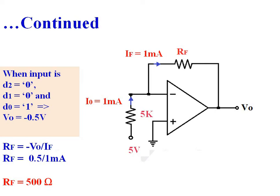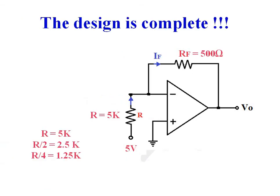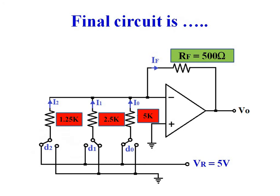If RF equals 500 ohms, then the output voltage is minus 0.5V when input is 001. The design is complete. We have feedback resistance RF equal to 500 ohms and R equal to 5 kilo-ohms. Therefore R/2 equals 2.5 kilo-ohms and R/4 equals 1.25 kilo-ohms. This is our final circuit.